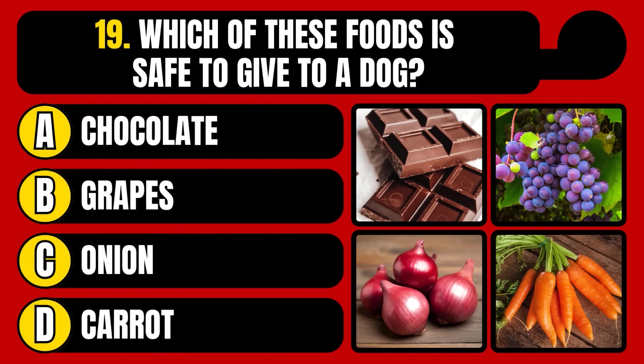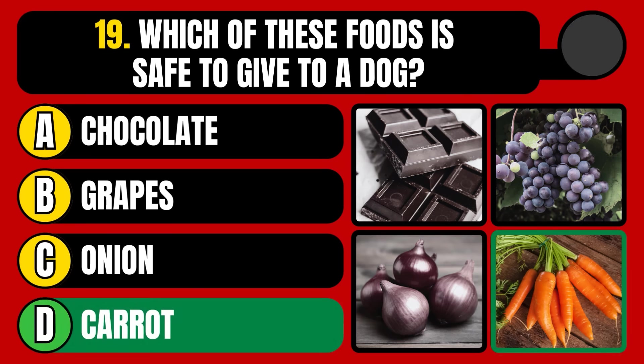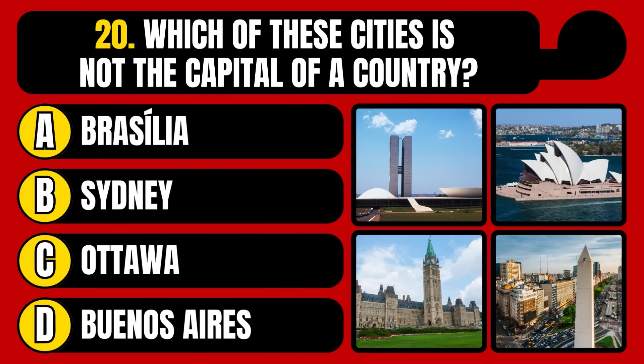Which of these foods is safe to give to a dog? Chocolate, grapes, onion, or carrot? The correct answer is option D, carrot.